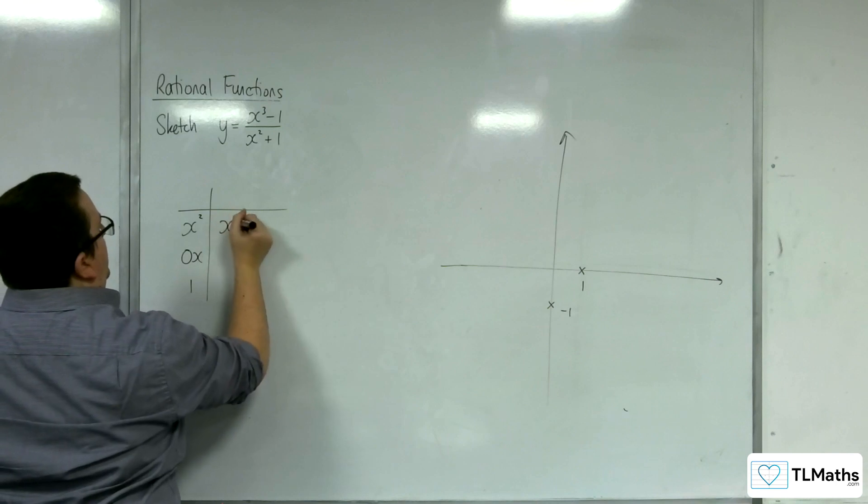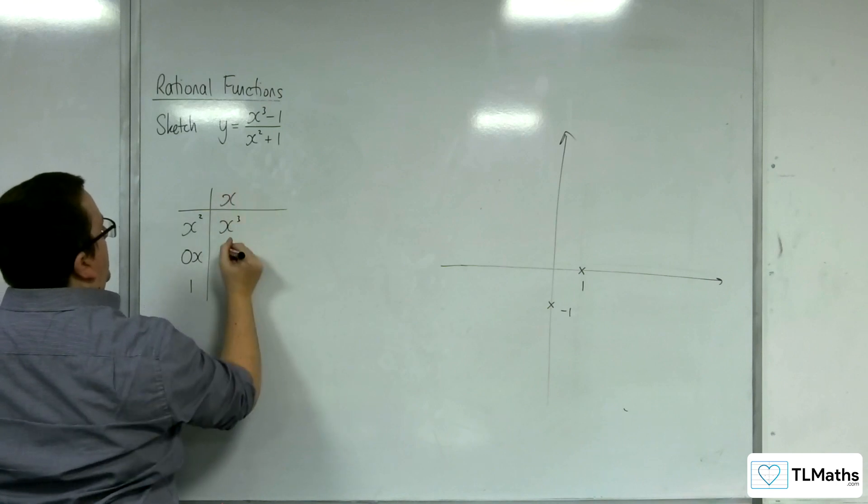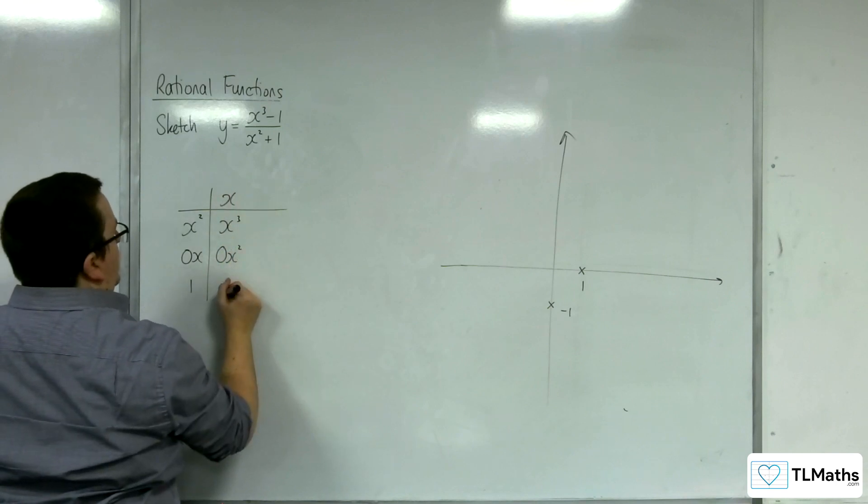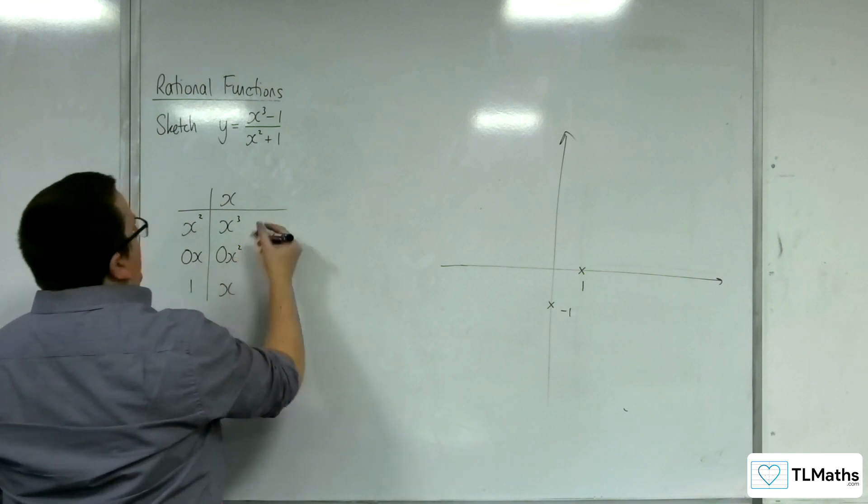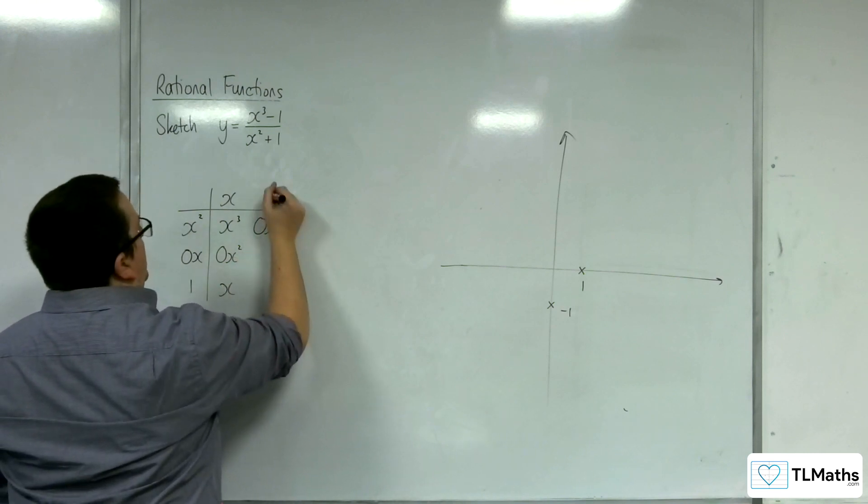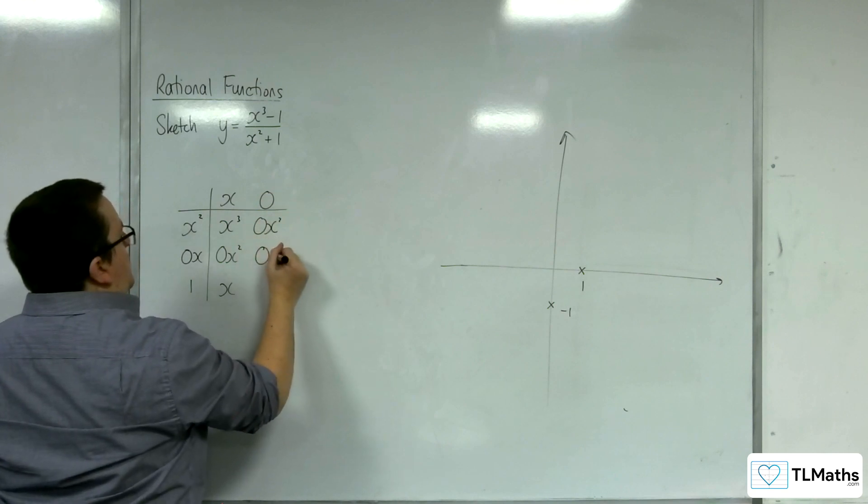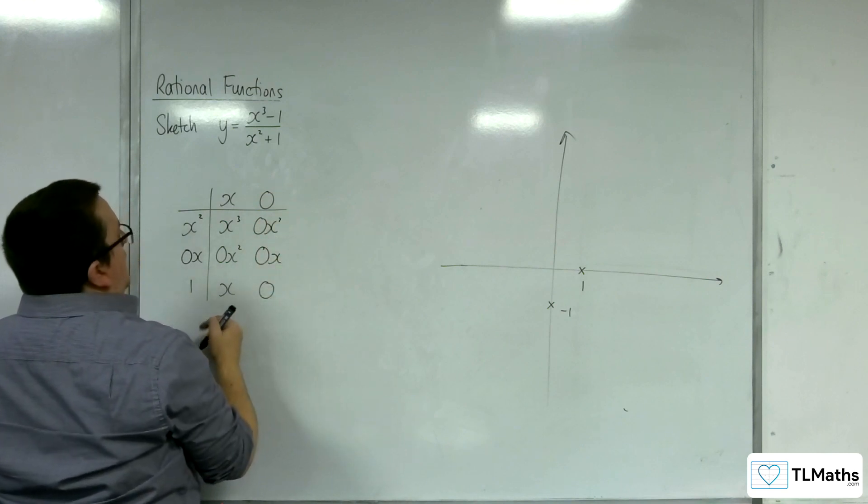And we want x cubed, so that'll have to be x, 0x squared, and x. Now, we don't want any x squared, so that'll be 0x squared, so that'll be 0, then 0x, then 0.